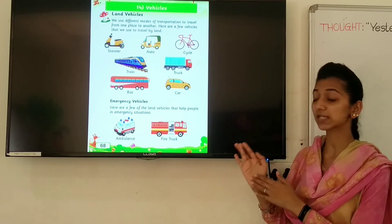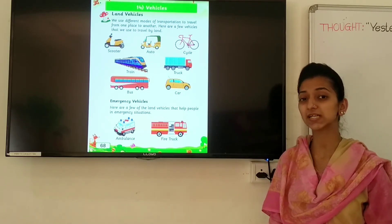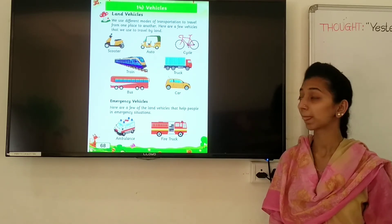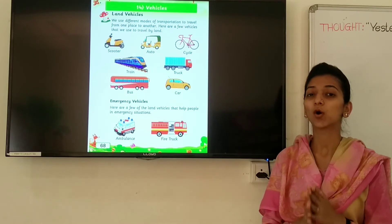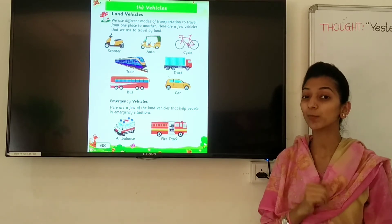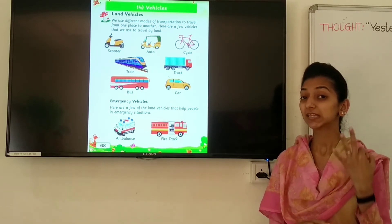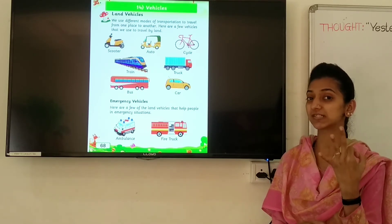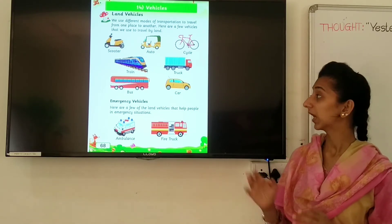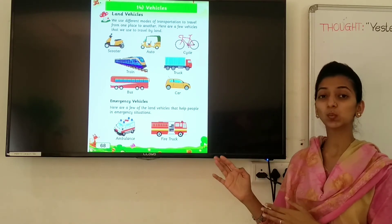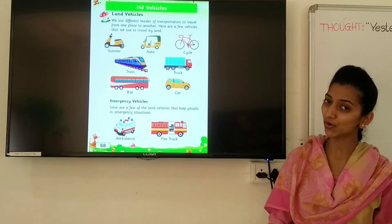Look at this next picture. Which vehicle is this? Auto. And auto has how many wheels? Three wheels. And what is the spelling of auto? A-U-T-O. Auto.